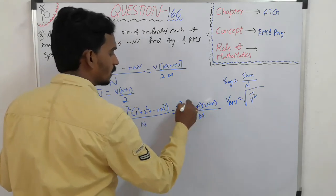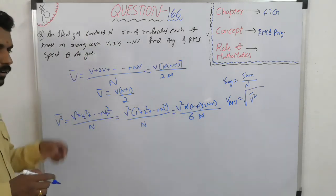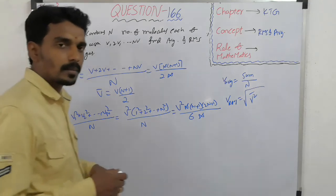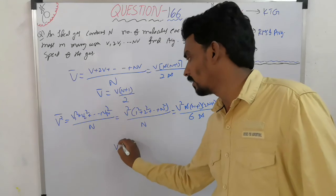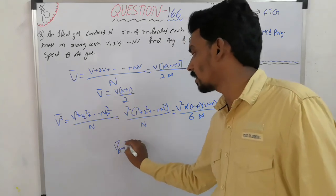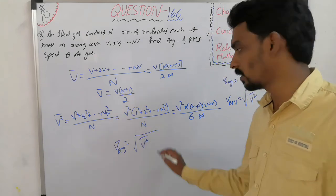So this is the way you can find the average speed and RMS speed. But here you got only average value of square of the speed. What is RMS velocity? Under root of mean of square of the speeds.